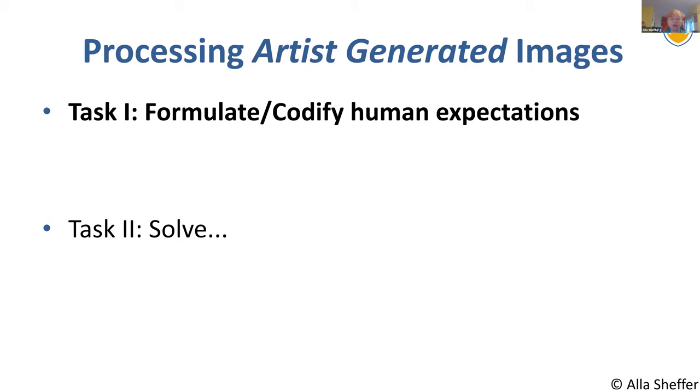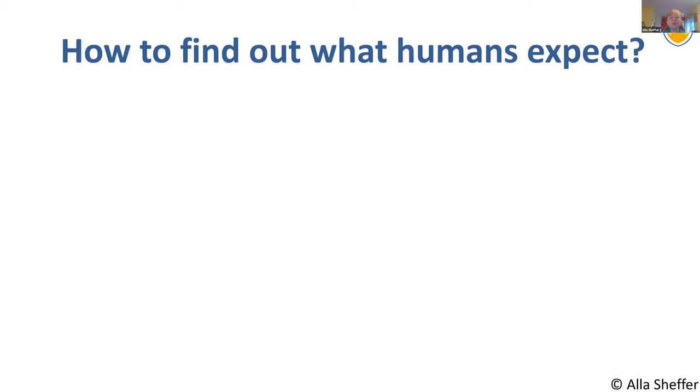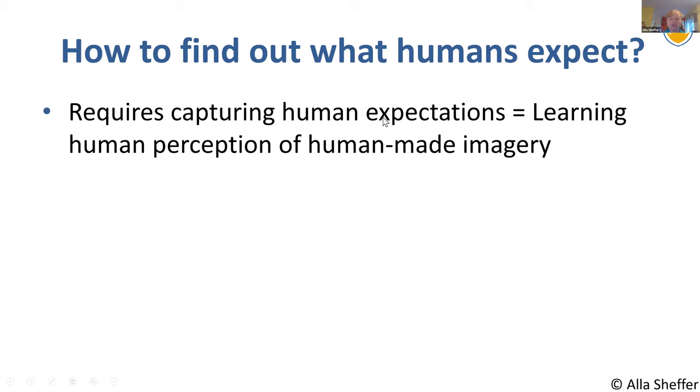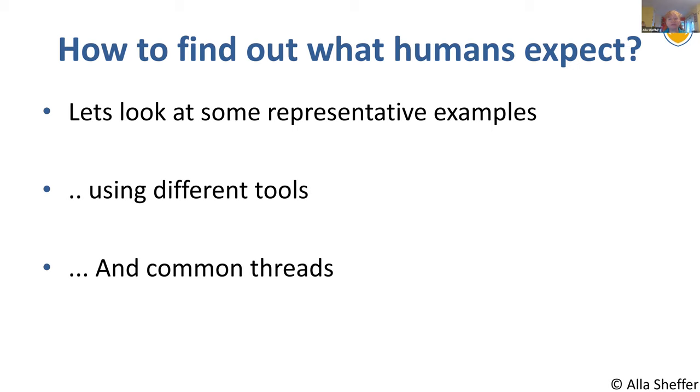Our first task is to actually formulate or codify the human expectation. How do we measure success? Once we can measure success, we can now try and solve. Solving the problem may still be very hard, but I strongly believe that this part, which is formulating what we actually want, in many ways, is often harder. So how do we find out what humans expect?